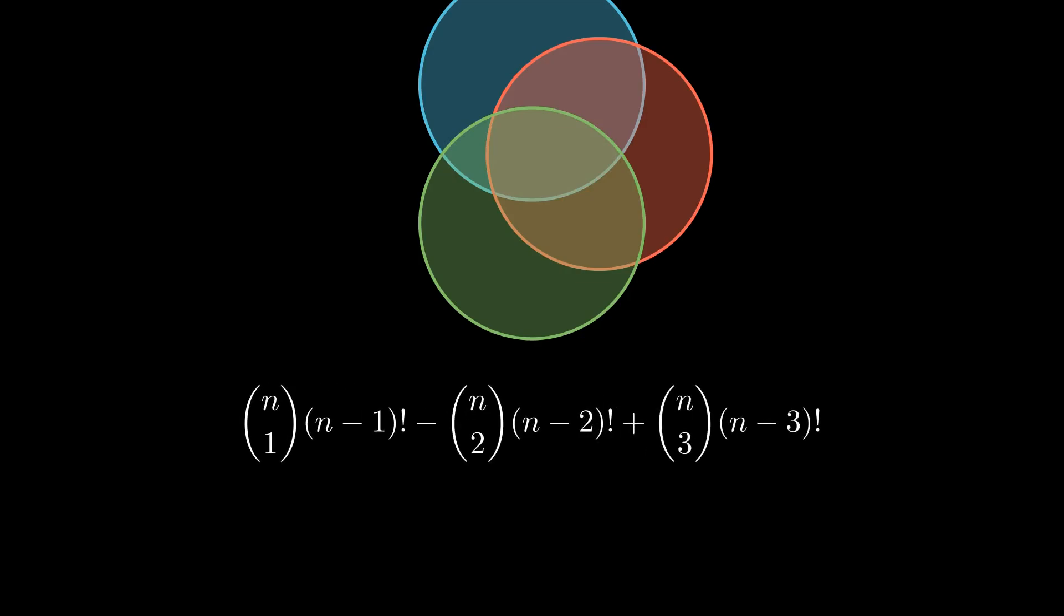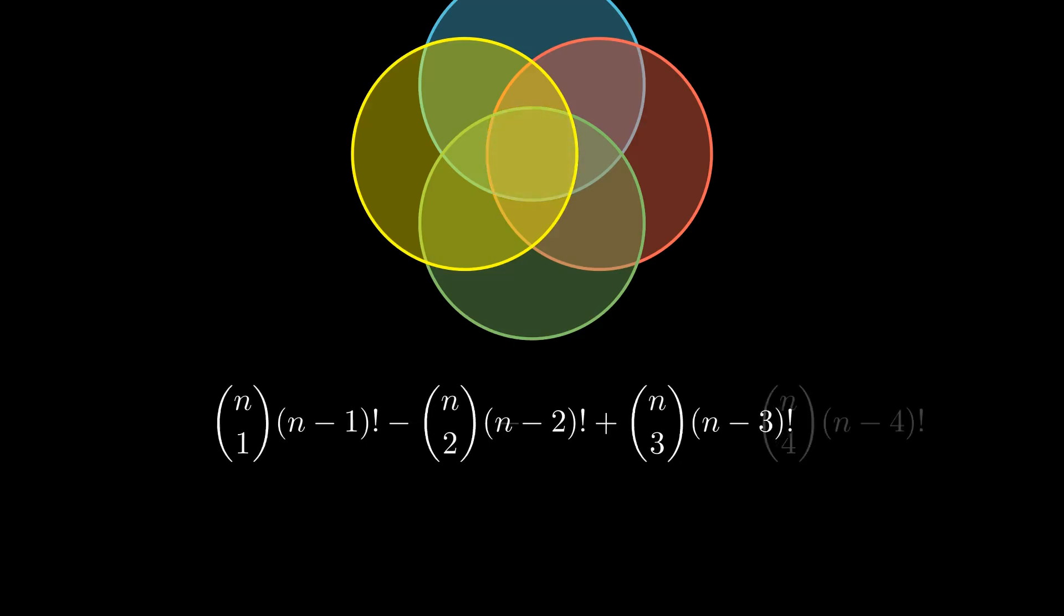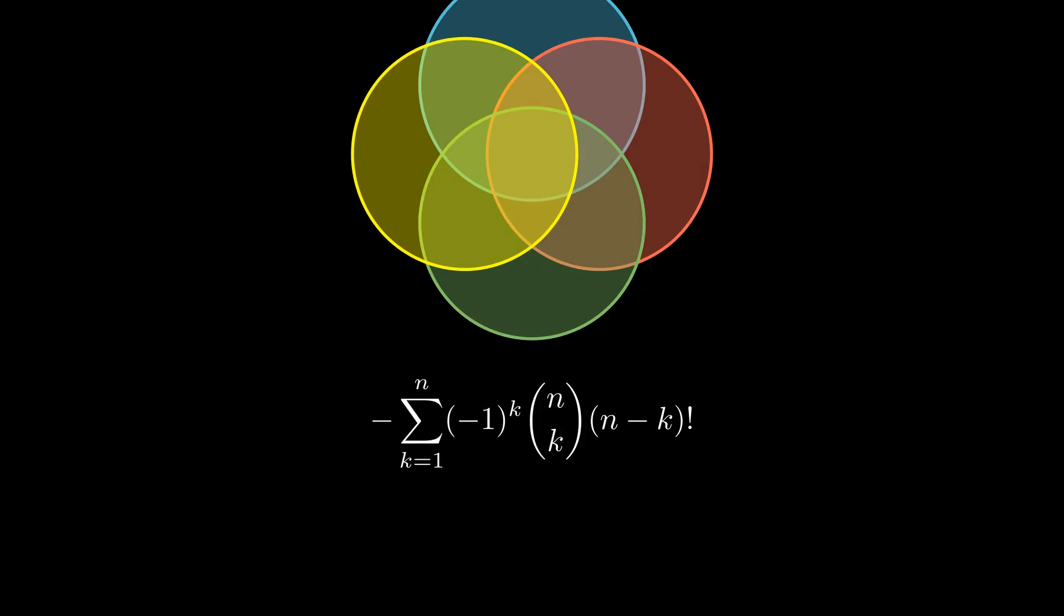Now we subtracted too many and have to add all intersections of three circles back. Such a sequence will continue until we run out of colors. Let's see how we can write it in a more compact form. We express the iterated minus with a (-1)^k.